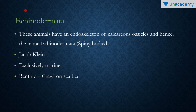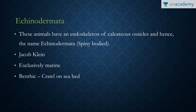Echinodermata — what does the name signify? When we split it up: 'derma' always refers to skin, and 'echinos' refers to spine. So these are spiny-skinned organisms. They basically have an endoskeleton of calcareous ossicles, and therefore the name Echinodermata. They were first discovered by Jacob Klein.